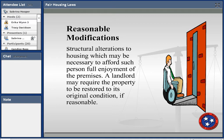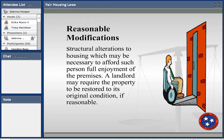A reasonable modification is a structural alteration to the building — for example, raising cabinets in an apartment so a wheelchair user can get underneath. These are whatever is necessary to afford full enjoyment of the premises. Modifications are usually done at the expense of the person with the disability unless it is a federally funded property, in which case the landlord covers it. Any structural adjustments may be required to be restored when the person leaves, but often they are enhancements that are not returned.